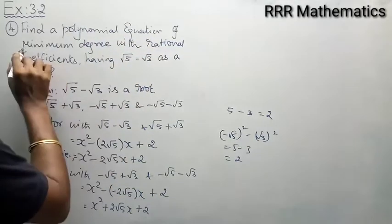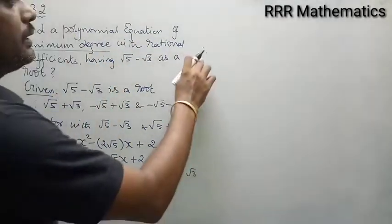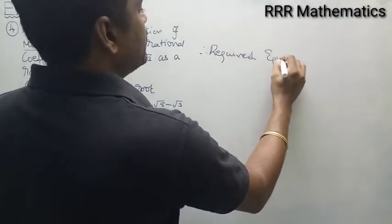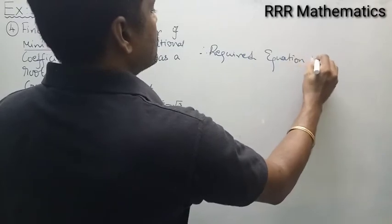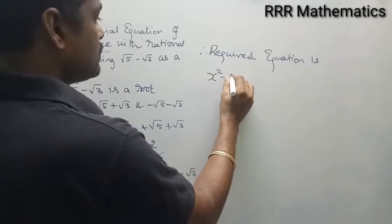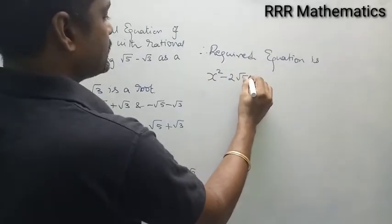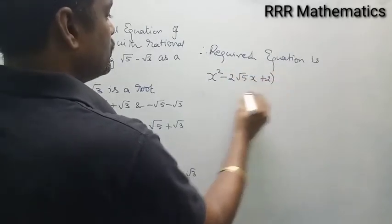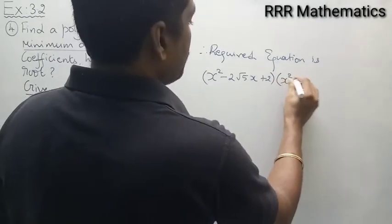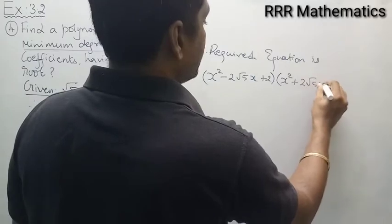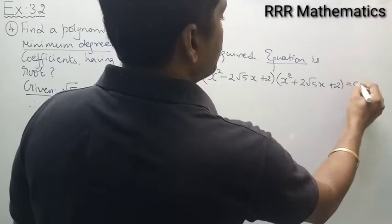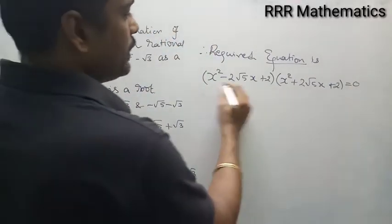You need a polynomial equation of minimum degree. Therefore the required equation is (x² - 2√5·x + 2)(x² + 2√5·x + 2) = 0. Now multiply these two.